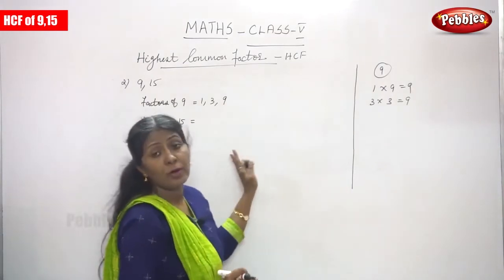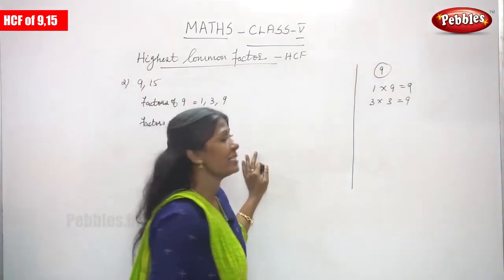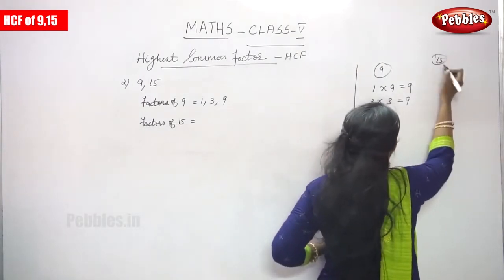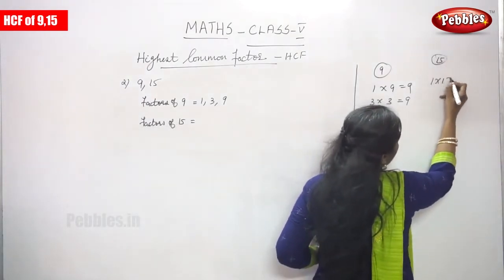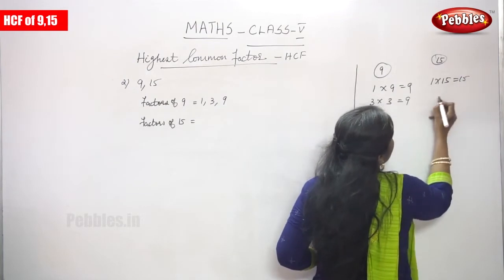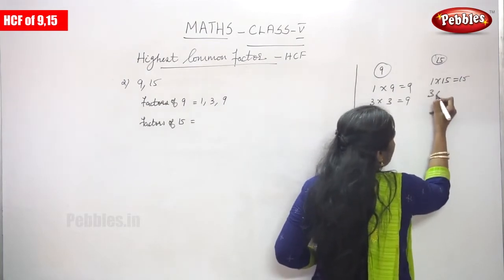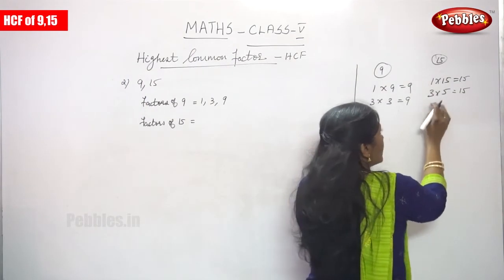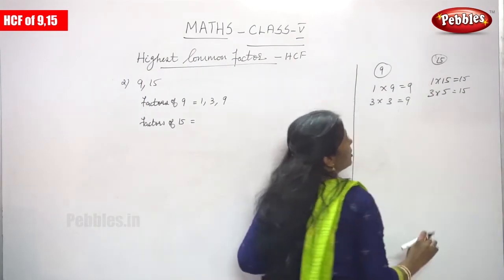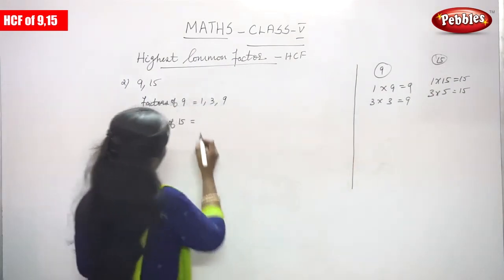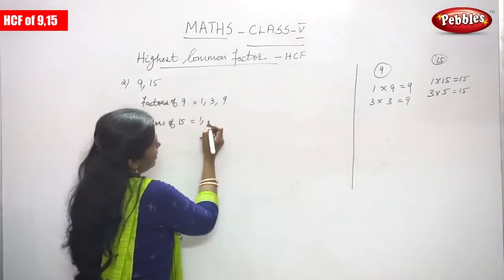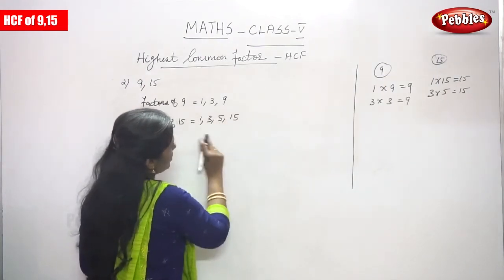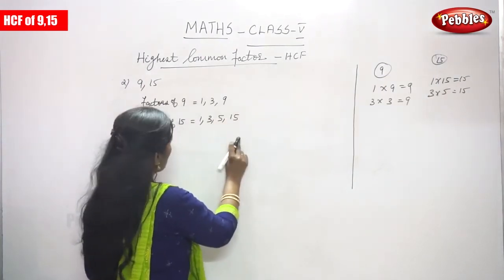Next, you have to find out the factors of 15. For 15: 1 into 15 you can get 15, and 3 into 5 you can get 15. So write the factors: 1, 3, 5, and 15. These are the factors of 15.